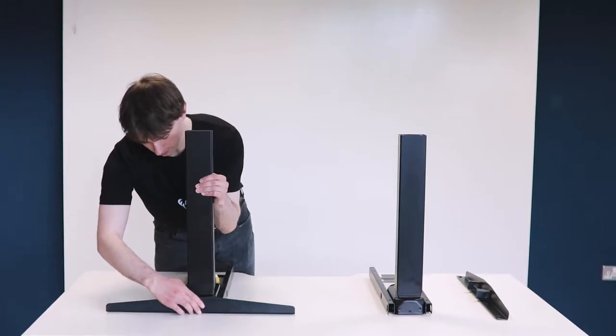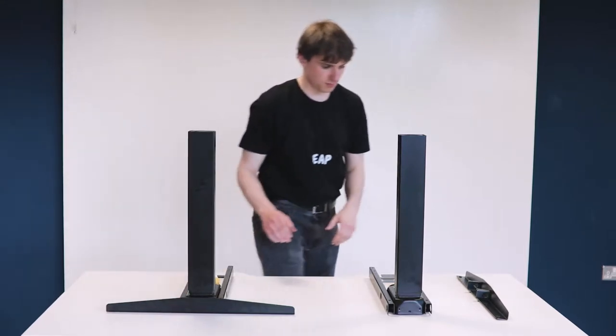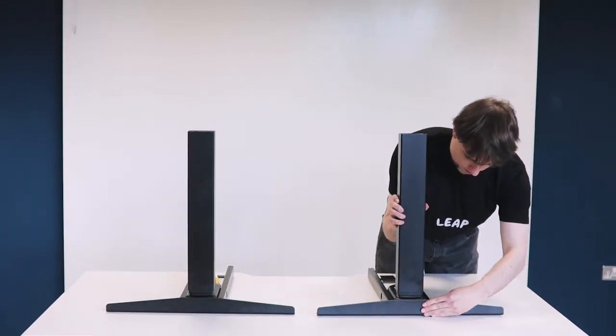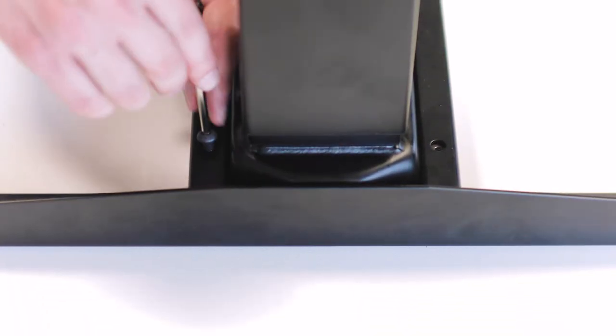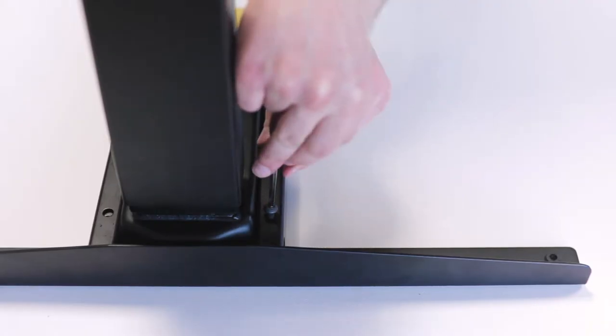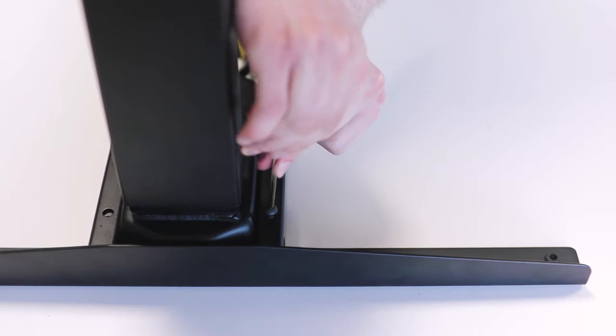Place the side bracket next to the leg, making sure that the longer side of the bracket is facing towards the front of the desk. Insert four of the larger machine screws into the holes using the allen key provided. Again, rotate these a few times without fully tightening the screw. Repeat this process for the other leg.